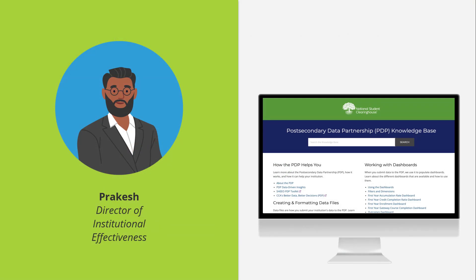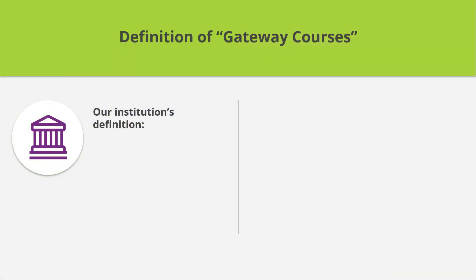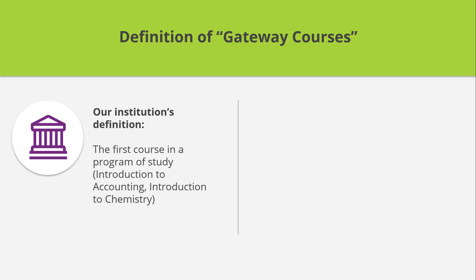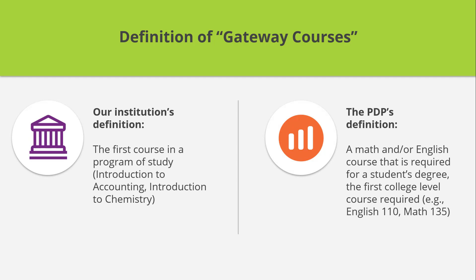Continuing his scan of the PDP data elements, PEL status, attendance status, program of study, and GPA should be easily extracted from our data systems. Then he comes upon Gateway Math status and Gateway English status. Last year, the Curriculum Committee completed the process of defining our institution's Gateway courses — any course that is the first in a program of study, like Introduction to Accounting or Introduction to Chemistry. This definition does not match the PDP definition, which is the first college-level math and/or English course required for the student's degree program. Students in major fields can sometimes choose from several courses to fulfill the single-course college-level math requirement, so more than one course may be classified as a math or English gateway course.